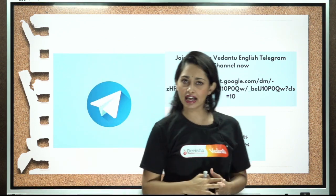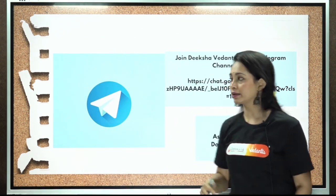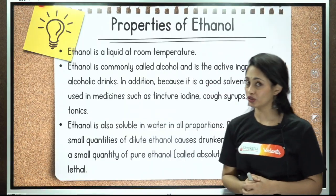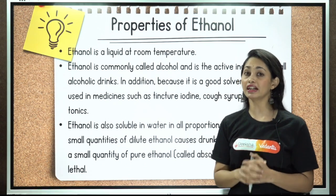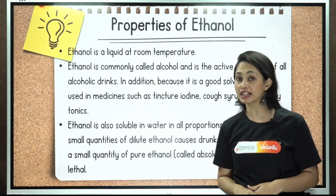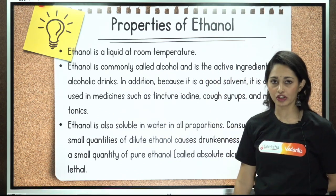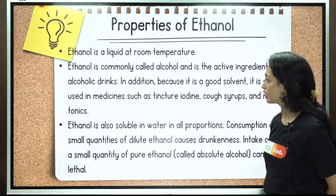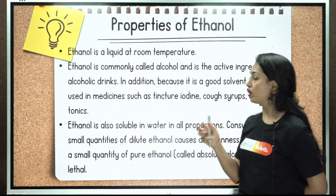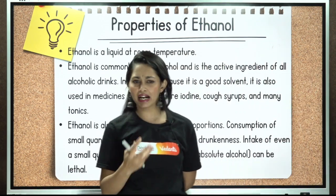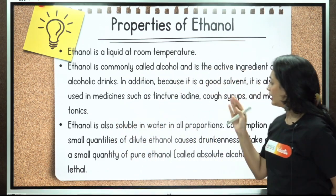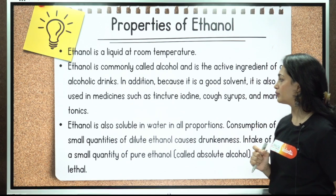Let's get started. When we hear about ethanol, the first thing we need to understand is its properties. Ethanol is a liquid at room temperature and is commonly called alcohol. It is the active ingredient in all alcoholic drinks like brandy and whiskey. Because it is a good solvent, it is also used in medicines such as tincture, cough syrup, and many tonics.